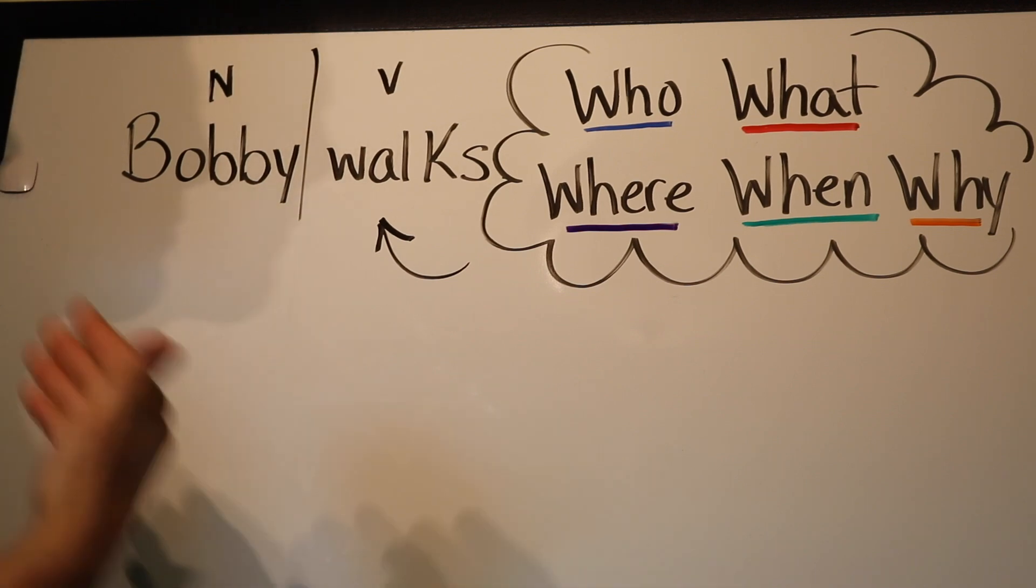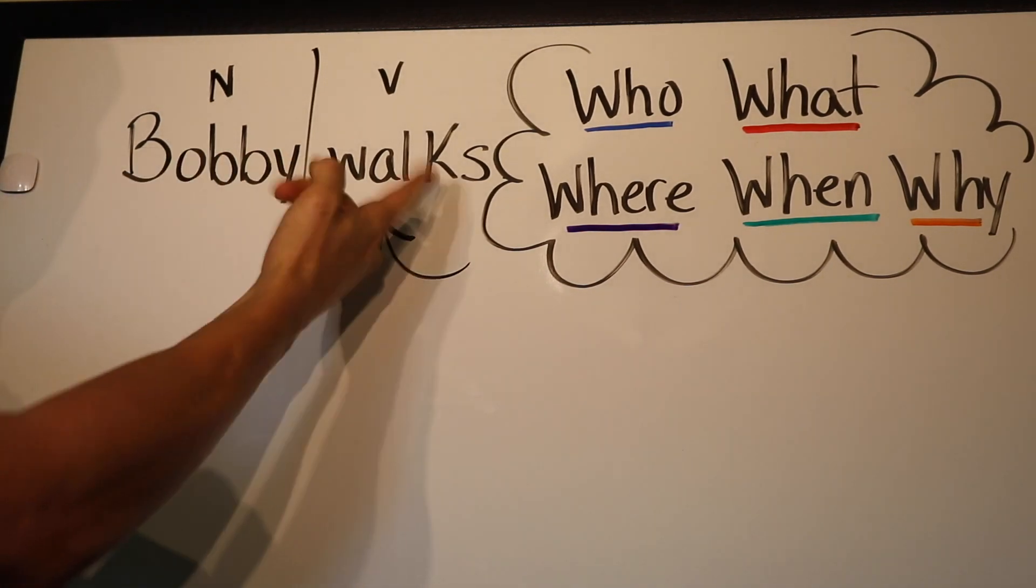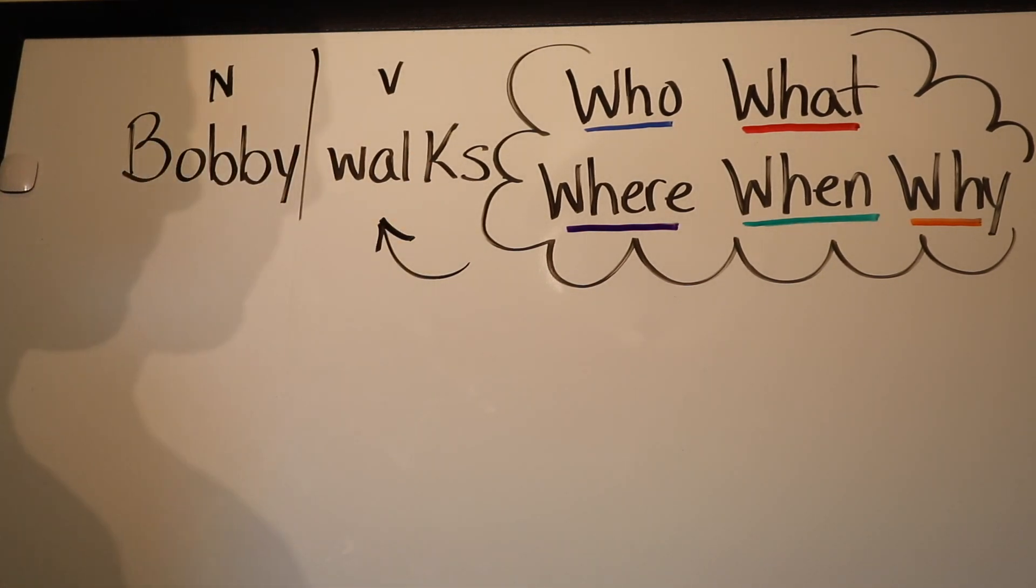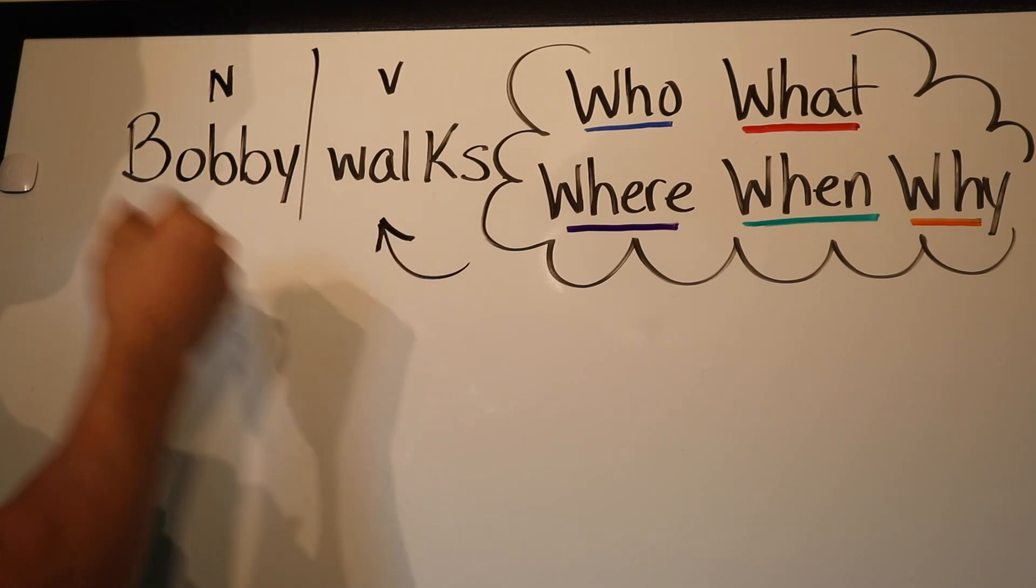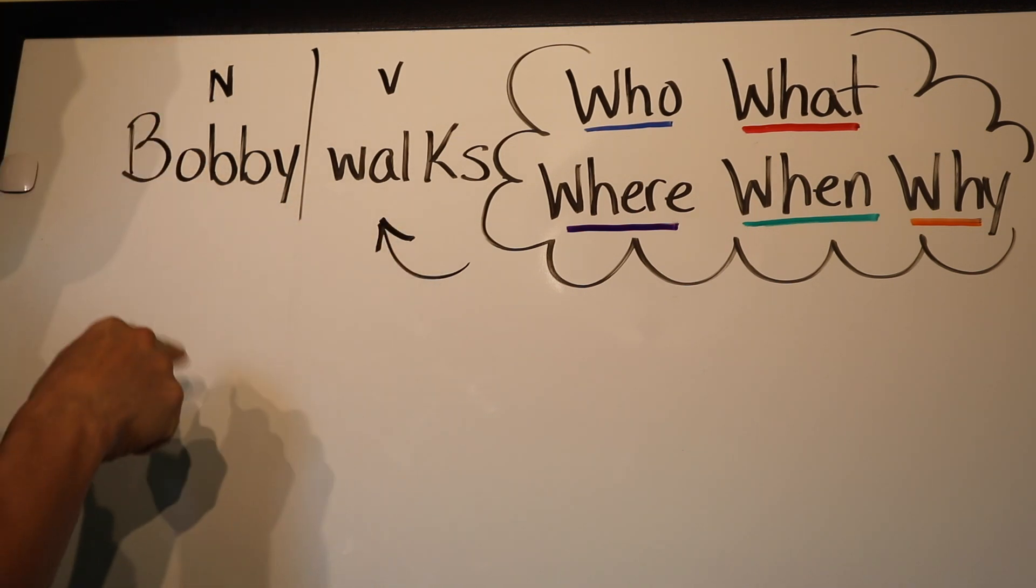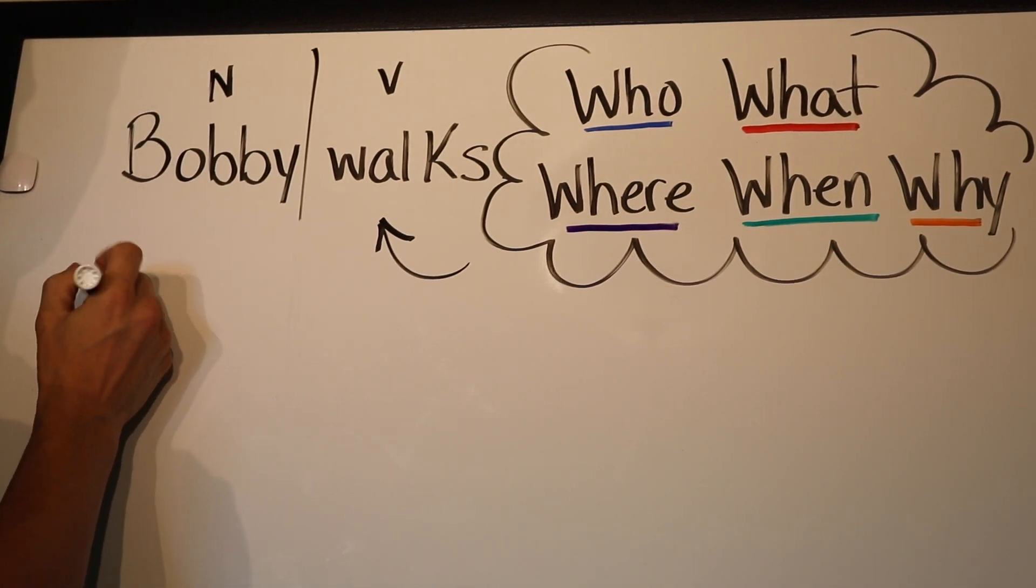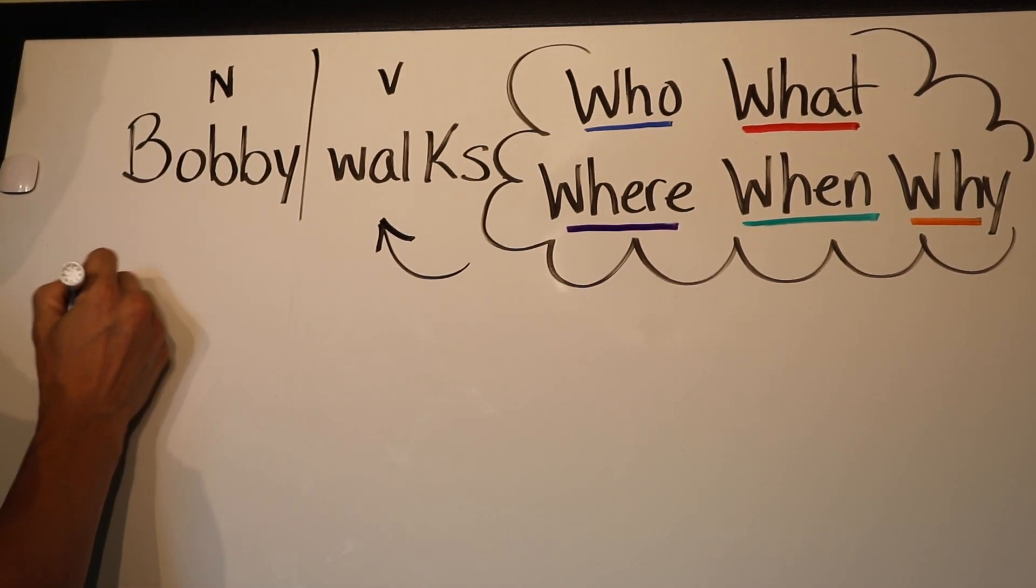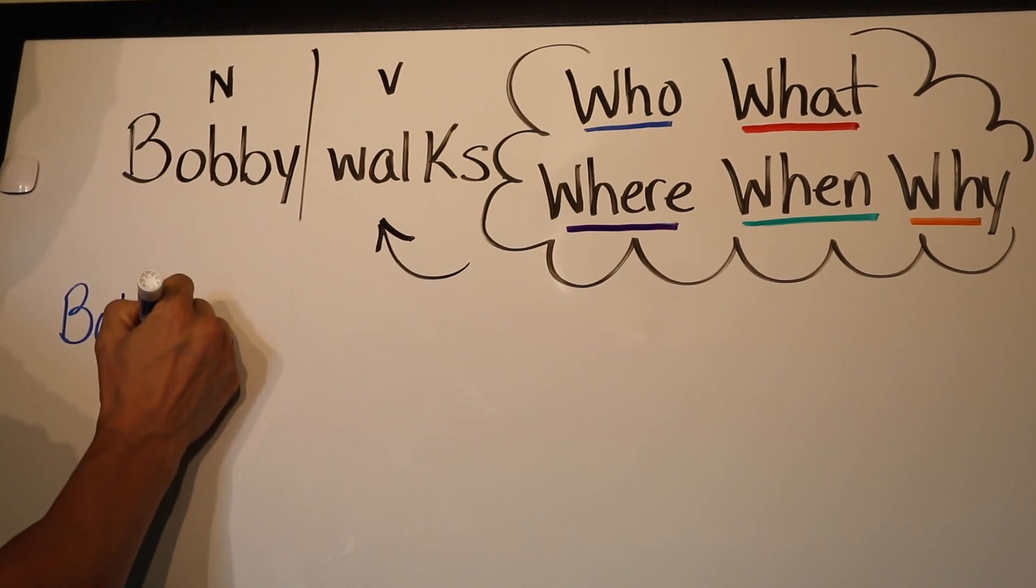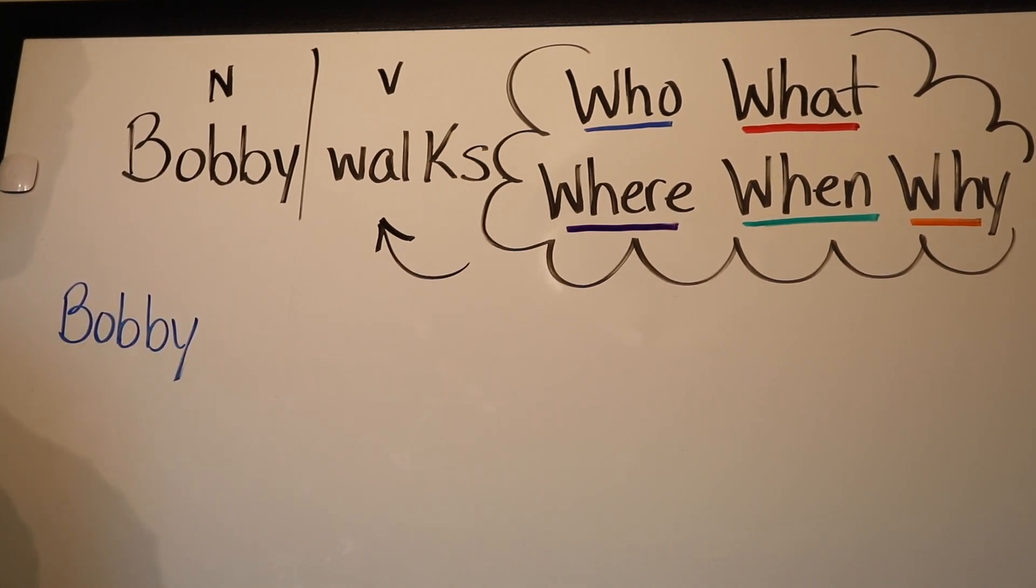I'm going to ask myself a series of questions to help build this sentence. First of all, who? So what's my noun? And I say noun because it can be anything. I could be talking about a moon doing something, but in this case we're talking about a person, we're talking about Bobby. Remember, a noun is a person, place, or thing. So Bobby is the who. So I'm going to start with Bobby.